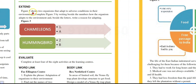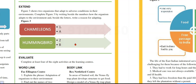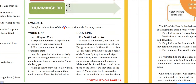Let's extend. Figure 3 shows two organisms that adapt to their conditions in their environment. Complete Figure 3 by writing beside the number how the organism adapts to the environment, and beside the letters write a reason for adapting. We have the chameleon — it changes color. And then the hummingbird — what is special about its flight and its body that allows it to adapt in its environment?